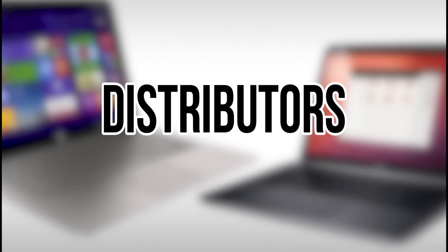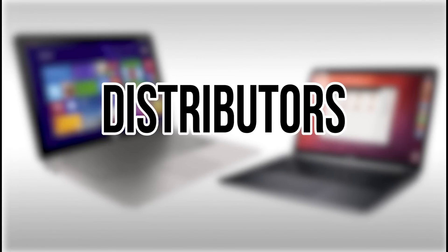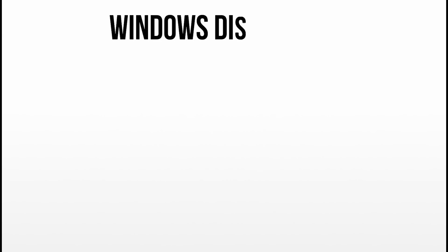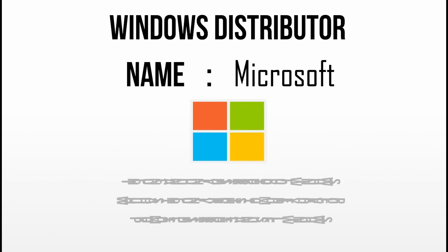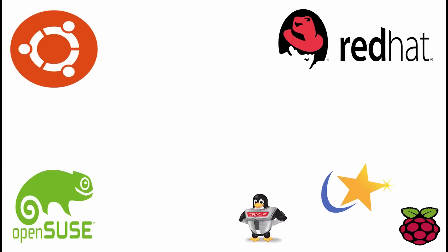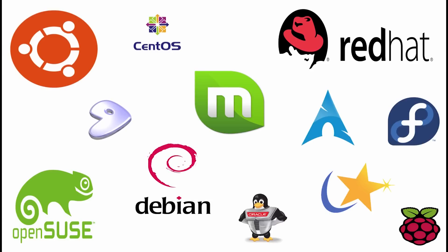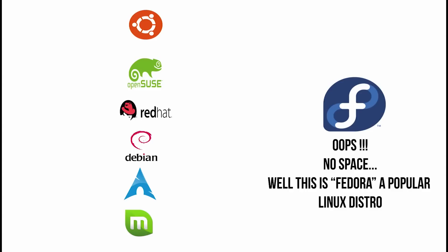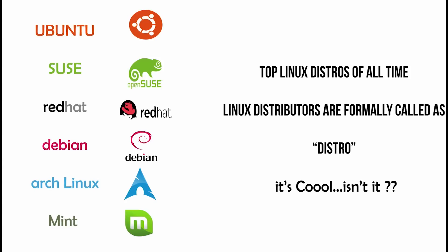The next thing which differentiates both operating systems is the distributors. When it comes to Windows, Microsoft is the one and only sole distributor. Microsoft has the right to develop, edit, modify, advertise, promote, sell, and redistribute Windows, and you cannot do such things without getting prior permission from Microsoft. When it comes to Linux, it has a hell of a lot of distributors — more than 50 to 100, with 10 to 20 being the most popular. I use Ubuntu. There are also popular distributors like Debian Linux, Mint Linux, Arch Linux, and Red Hat Linux.